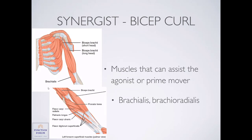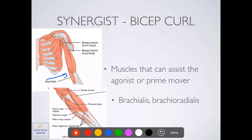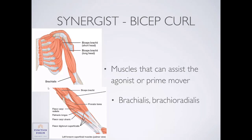Muscles often have helpers — other muscles that can assist — and that's certainly the case with a bicep curl. While the biceps tends to be the first muscle active during elbow flexion, two other muscles assist: the brachialis and the brachioradialis. They're both perfectly positioned to do elbow flexion. If you lift a very light weight, the first muscle typically called into play is the biceps brachii. As you increase weight or as the biceps fatigues, you rely more heavily on the brachialis and brachioradialis — that's why they are considered synergists of elbow flexion.